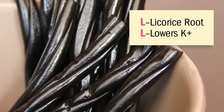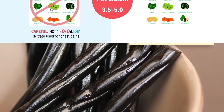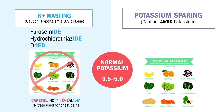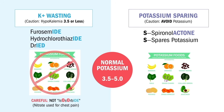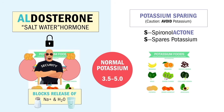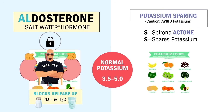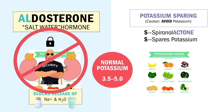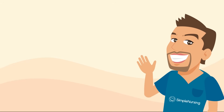Potassium sparing diuretics — S for spironolactone, S for spares the potassium. Just like ACE inhibitors (-prils) and ARBs (-sartans), this drug spares potassium too. But instead of blocking angiotensin, spironolactone blocks aldosterone directly to let fluid out of the body. It ends in '-tone,' so think it blocks aldosterone.